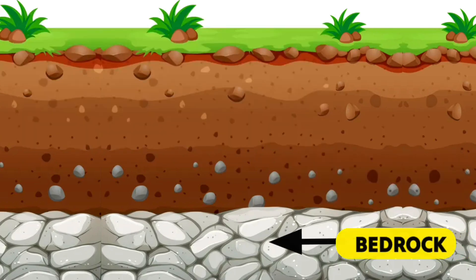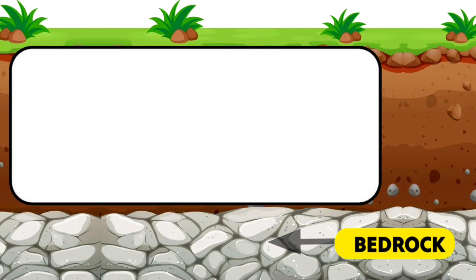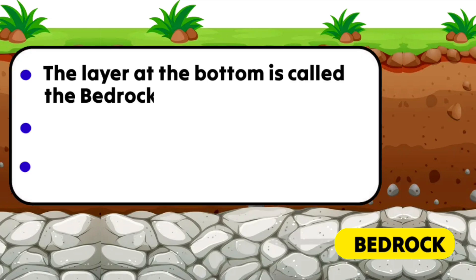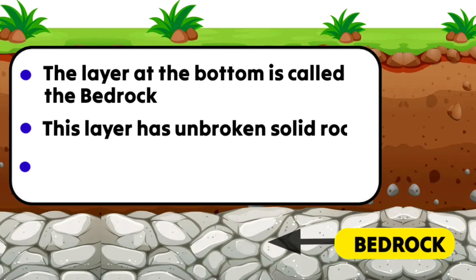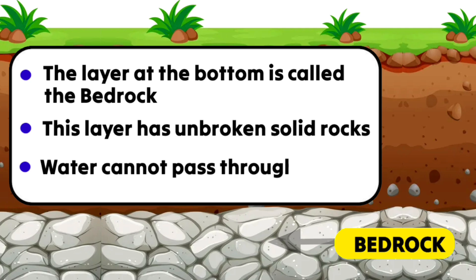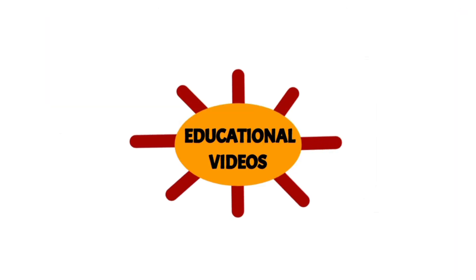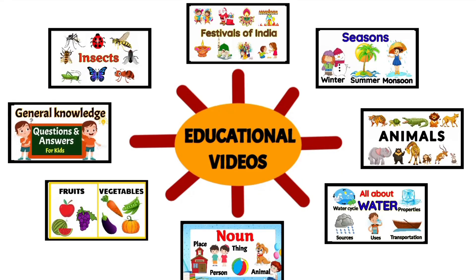The fourth and bottom layer is called bedrock. Bedrock has unbroken solid rocks and water cannot pass through this layer. Thank you for watching — for more educational and learning videos for children, do like, share, and subscribe to our channel.